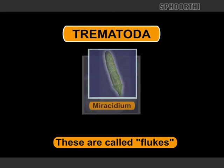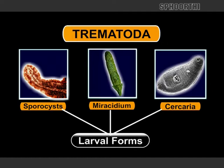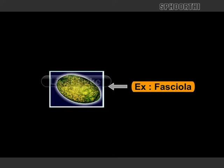Class Trematoda: These are called flukes. Cercaria forms are seen during development. Example: Fasciola, that is liver fluke.